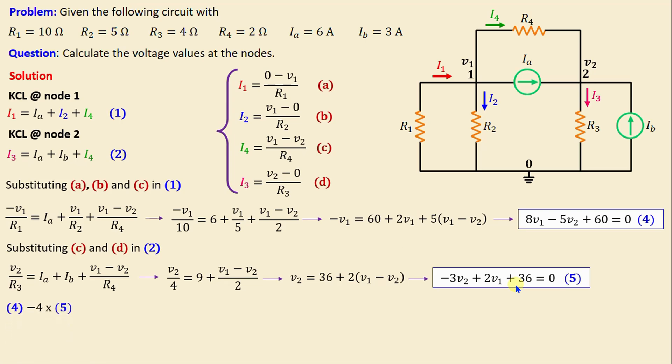Now by performing equation (4) minus 4 times equation (5), we derive one equation in terms of V2. Finally, we obtain: V2 = 84/7 = 12 volts.